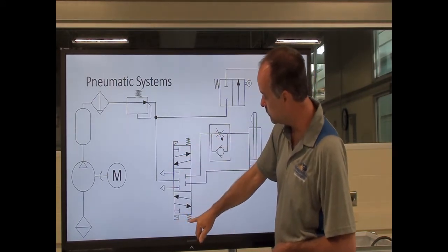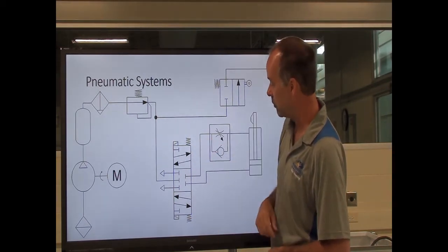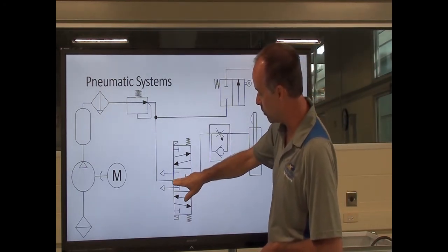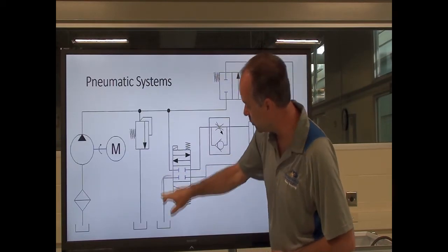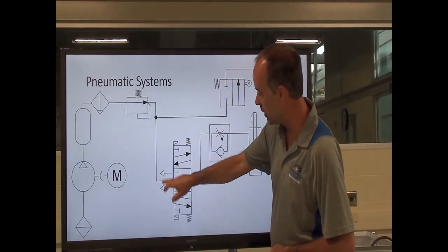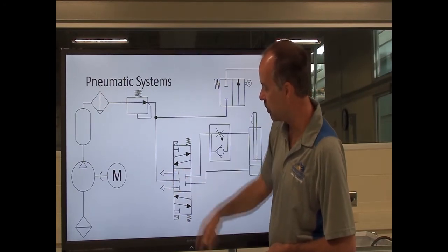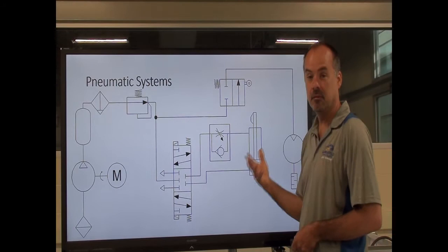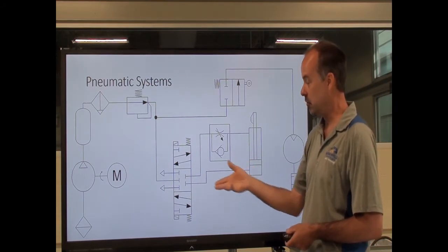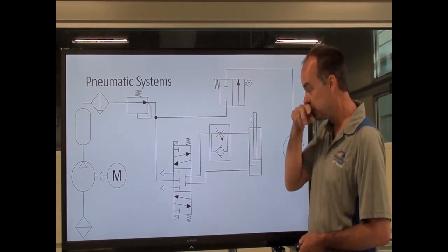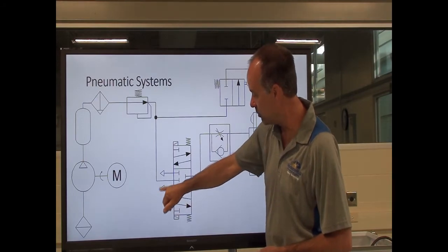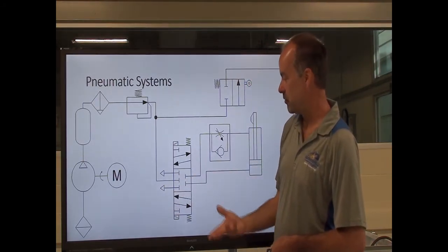The difference is that with the hydraulic system we had one drain port back to tank, but with this valve I've got two exhaust ports. These outlined triangles tell me that air is just exhausted to atmosphere. This doesn't go back to a holding tank — once we're done using this air and it's performed its work, it's exhausted to atmosphere. A line coming off to an open triangle tells me it's going to exhaust to atmosphere.